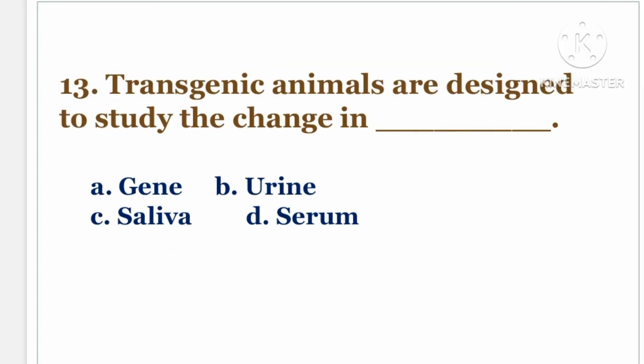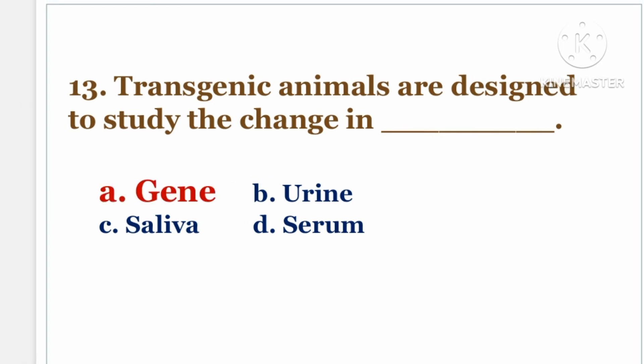Next question. Transgenic animals are designed to study the change in DASH. The options are A. gene, B. urine, C. saliva, D. other species. The answer is A. Gene.